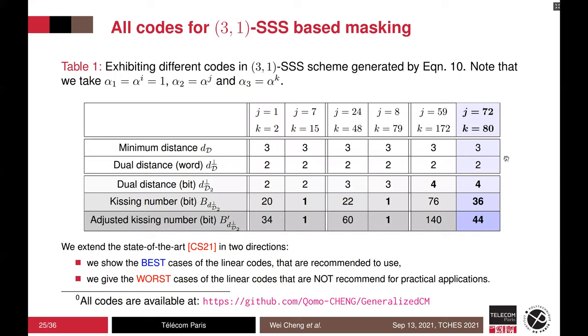The black curve gives the best code and the approximation in Theorem 2 are more accurate when the noise increases. Next, we give an exhaustive study list in Table 1. Different codes can have various dual distance and the adjusted kissing number. As shown in the last column, we give the best cases of code for 3.1 SS-based masking and comparing the state of the art, we show a systematic approach to find the best code. In addition, we show that some parameters are the worst cases and are not recommended for practical use. In particular, for the first time, we illustrate the impact of both code C and D in its side-channel resistance of GCM.